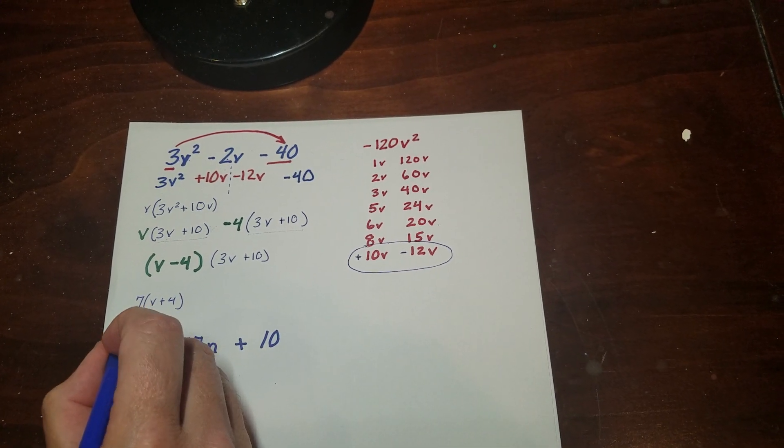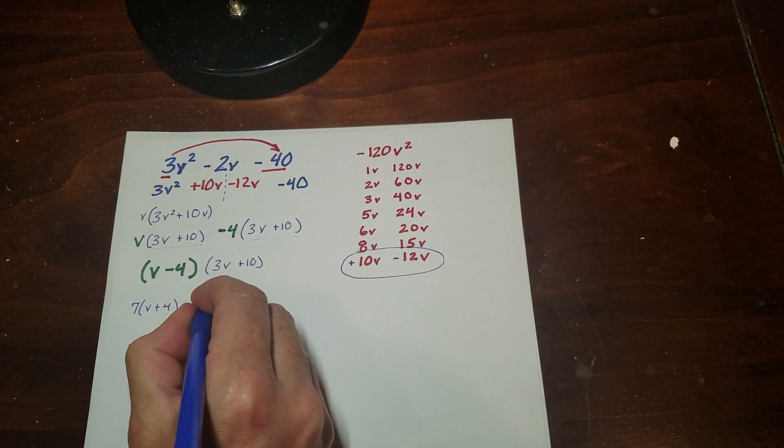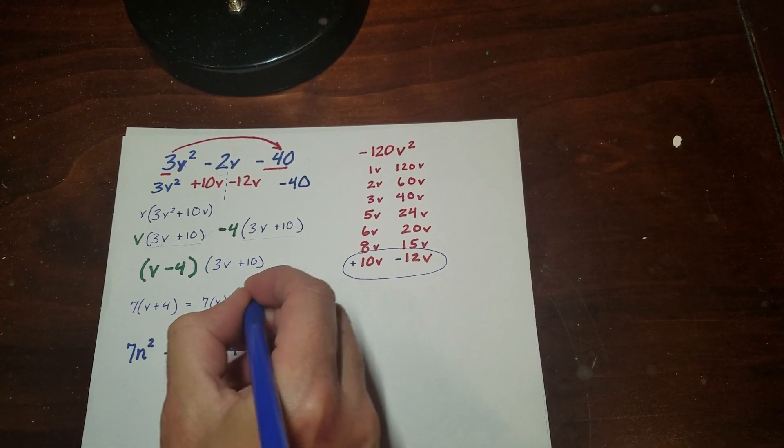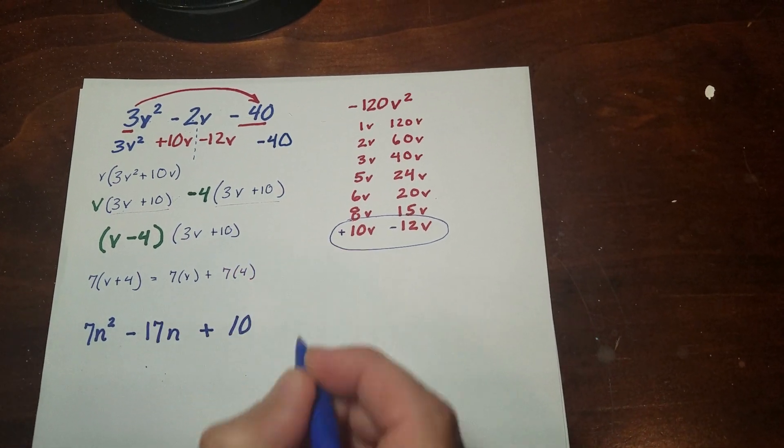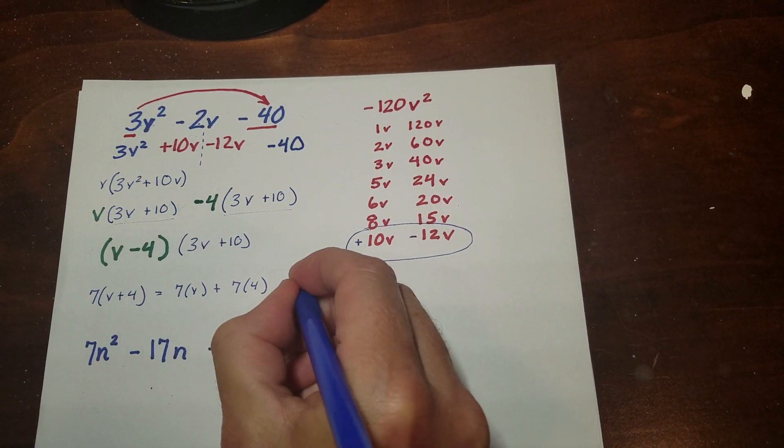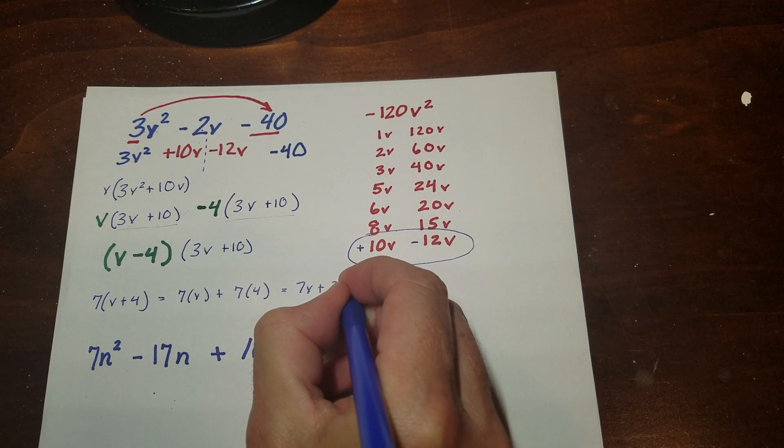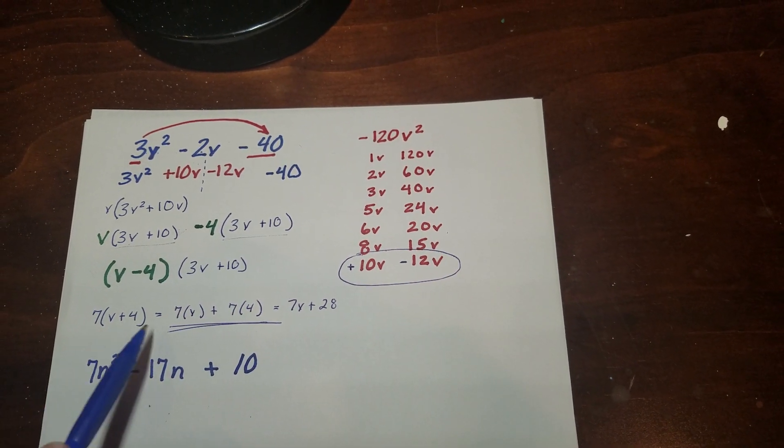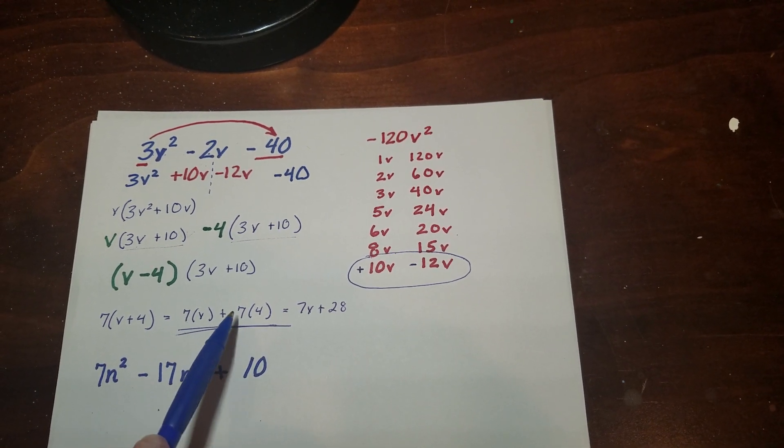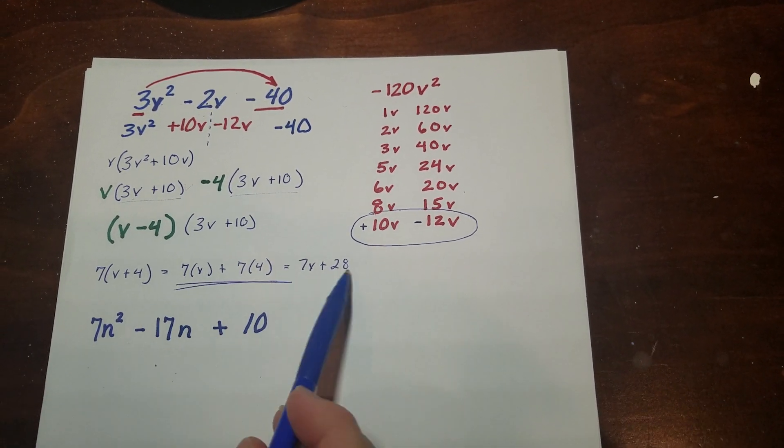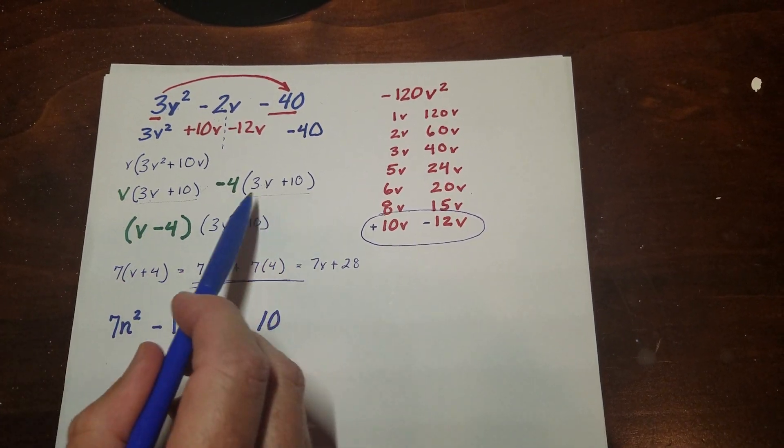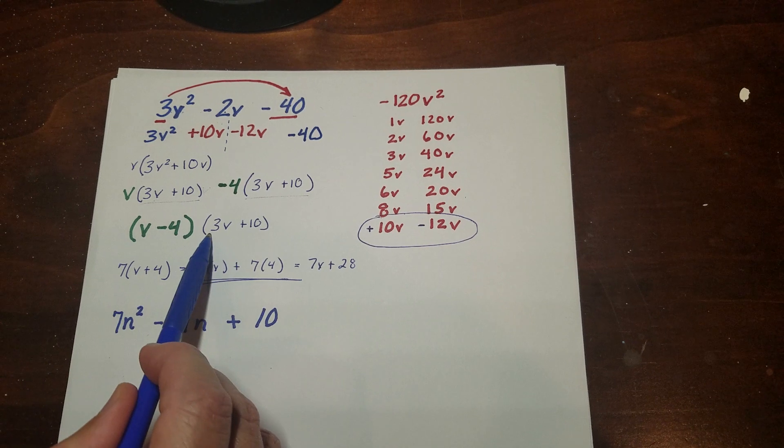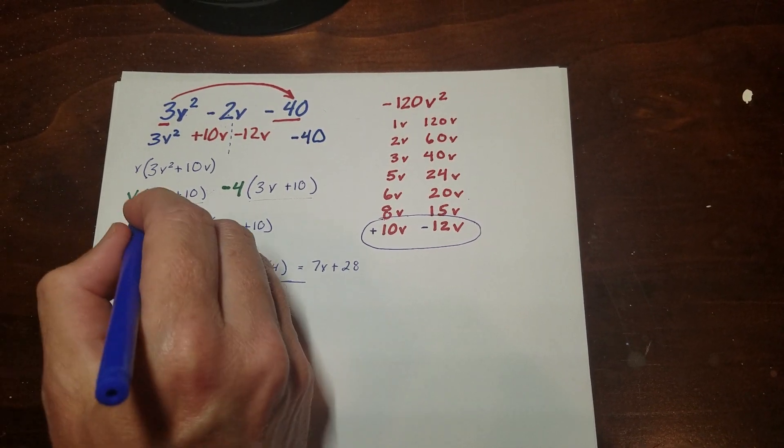And you knew the answer was 7v plus 28. But your teacher would make you write it out like this first. Right? And then you'd write 7v plus 28. And you're always angry about them making you write that out. Well, here's why. You could see here there's two 7s. But I only used it once over here. So that's why there's two of them over here because what it is, is it's this number times the v and then this number times the negative 4. But when you factor it, that's the answer right there.